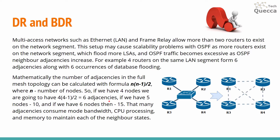If we have five nodes we get 10 adjacencies, and if we have six nodes we get 15 adjacencies. That many adjacencies consume more bandwidth, CPU processing, and memory to maintain each of the neighbor states.